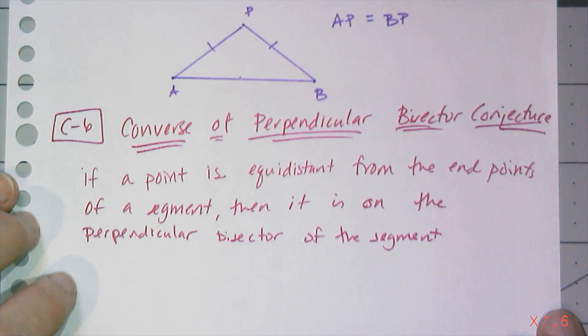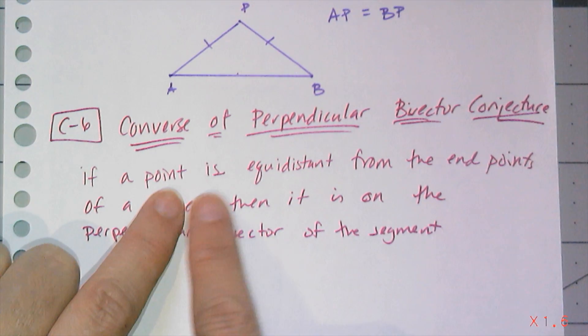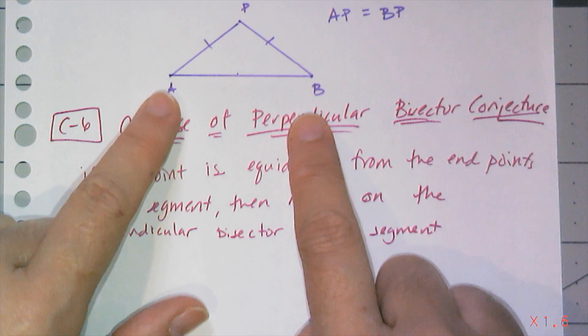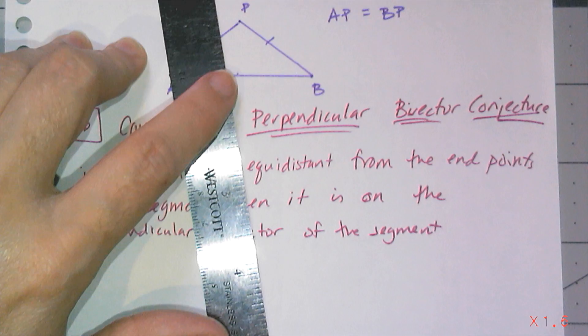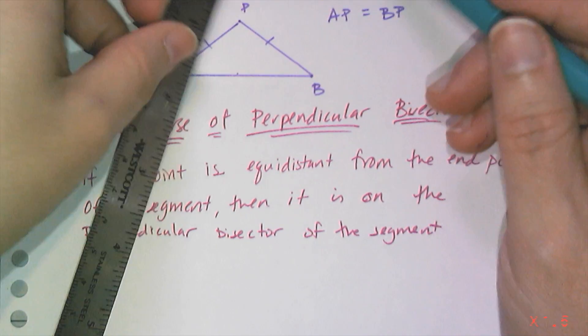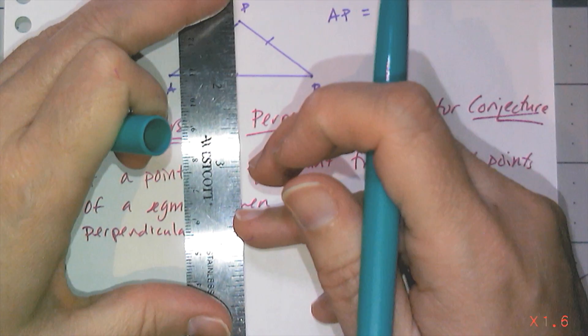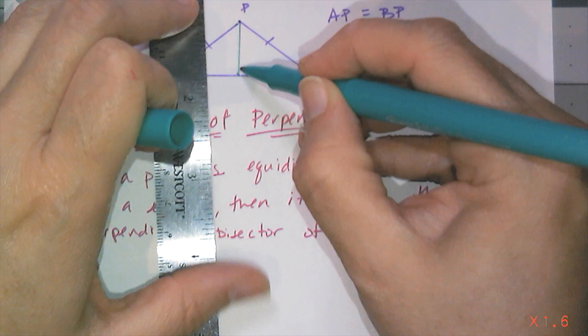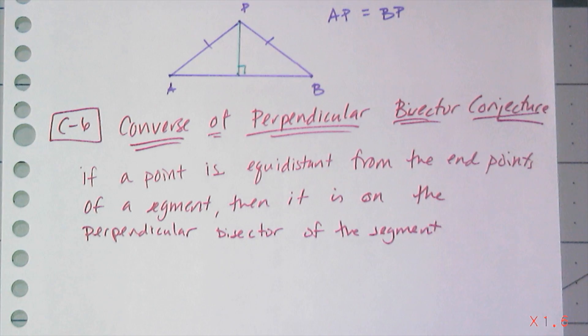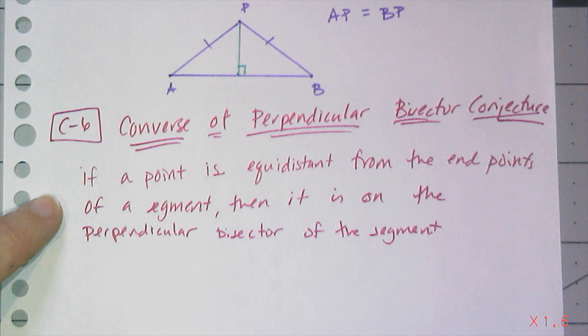That means that if I have a point that I know is equal distance from two endpoints of a line segment, that point has to be on the perpendicular bisector. So that means I can draw this extra line in because of this conjecture. This conjecture says that I can draw this extra line segment in and make it a right angle. Well, I know that's true because of this conjecture, C6.